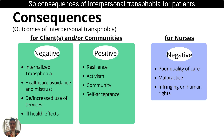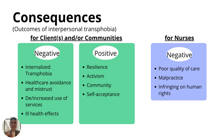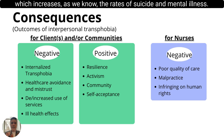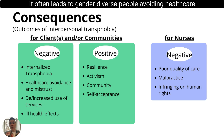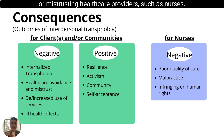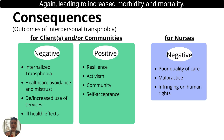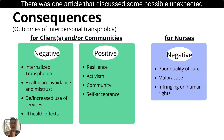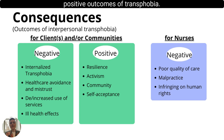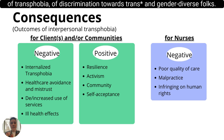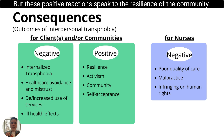Consequences of interpersonal transphobia for patients can ultimately mean life or death. Interpersonal transphobia can lead to internalized transphobia, which increases rates of suicide and mental illness. It often leads to gender diverse people avoiding or mistrusting healthcare providers such as nurses, and can prevent trans people from getting emergency or preventative care, leading to increased morbidity and mortality. One article discussed some possible unexpected positive outcomes of transphobia, but evidence is quite certain that there are dire consequences. These positive reactions speak to the resilience of the community.